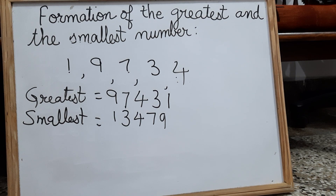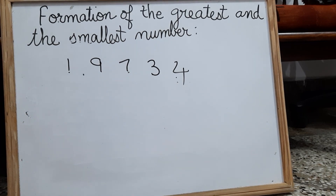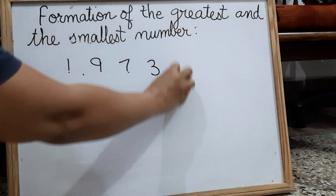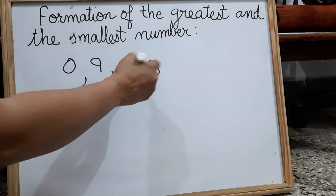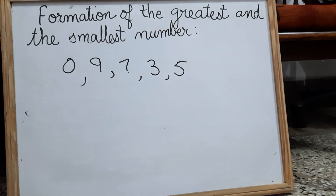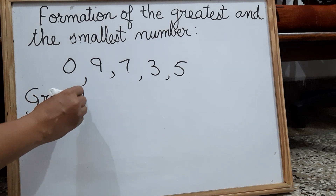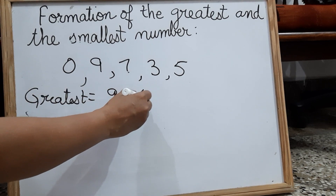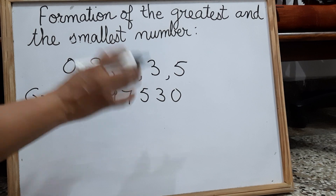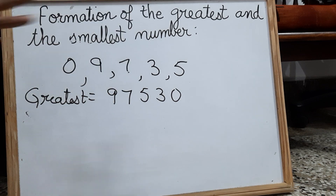Now, if zero is present in the digits, how do we form the numbers? For the greatest number, it is not difficult — the rule is the same. Start with the greatest digit. So with digits nine, seven, five, three, and zero, we start with nine, then seven, then five, then three, and then zero. So we got 97,530 as the greatest five digit number.